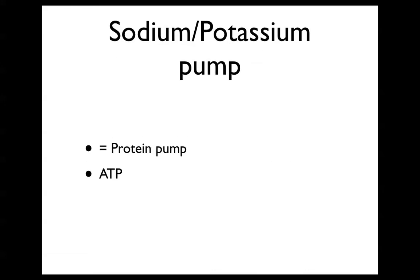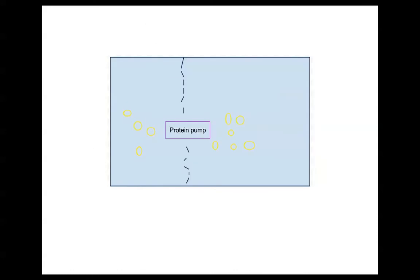Sodium-potassium pump is the first active transport and is also called a protein pump. It requires ATP. This protein pump in the picture is here to move molecules that are against the concentration gradient.